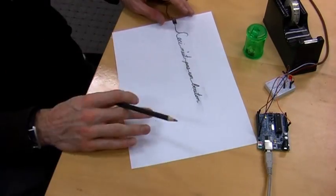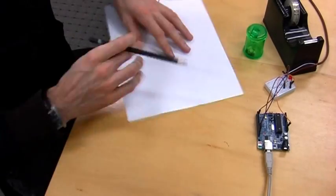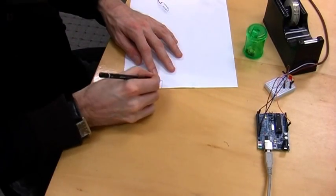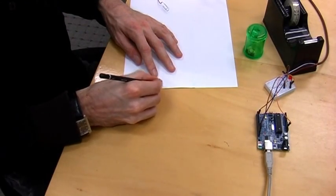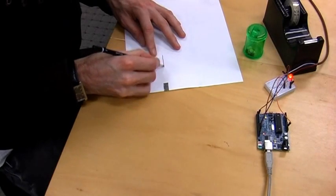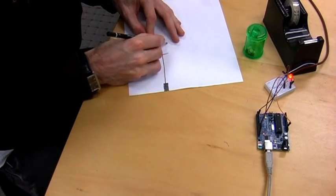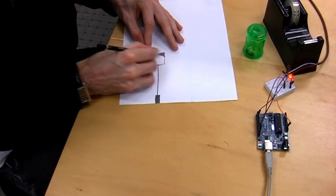Of course, since capacitive sensors are non-contact sensors, we can do something else cool. On the other side of your paper, draw a box and fill it in, and connect it within line to another box on the edge of the paper. I cover it up with tape again just to keep everything clean.